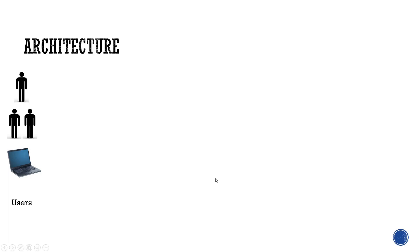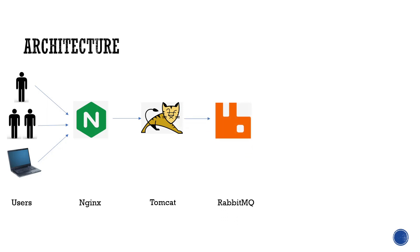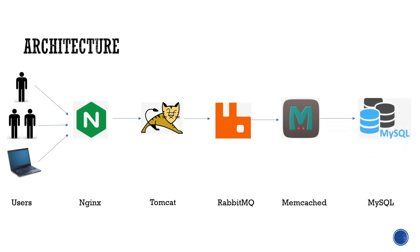In the architecture, the first component is the user. As you can see on screen, there could be a single user or multiple users accessing via a browser. These users are going to make a call to nginx, and after that the control goes to the Tomcat server. From Tomcat it talks to RabbitMQ in a queue-based manner, then to Memcache, and finally to MySQL which is the database for this application.